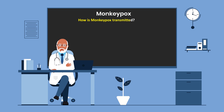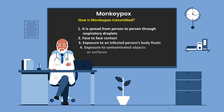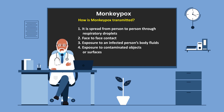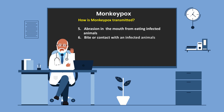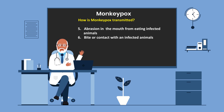How is monkeypox transmitted? It is spread from person to person through respiratory droplets, face-to-face contact, exposure to an infected person's body fluid, and exposure to contaminated objects or surfaces. It is also spread from eating infected animals, which can result in abrasions in the mouth, and from contact with or being bitten by an infected animal.